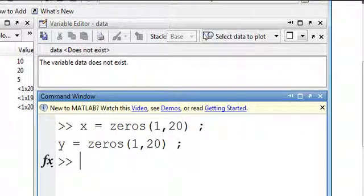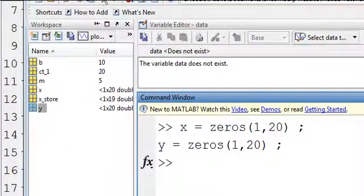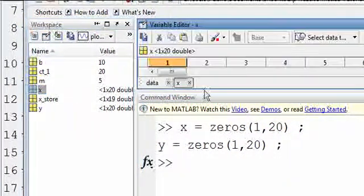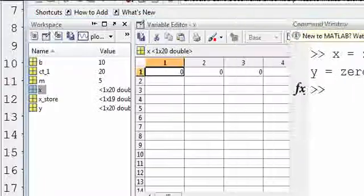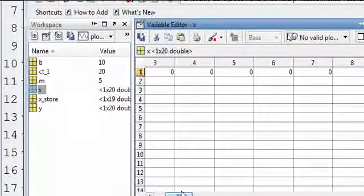And if we look at the output, we can see x. If I scoot this over just a little bit, x is a 1 by 20 array of all zeros. So we have 1 by 20 of all zeros.